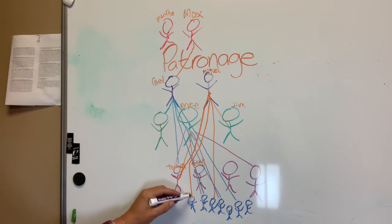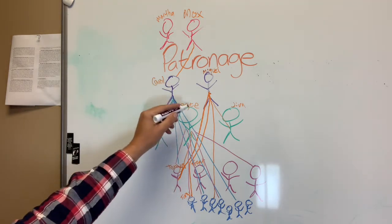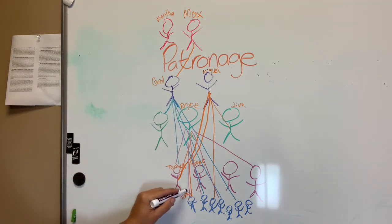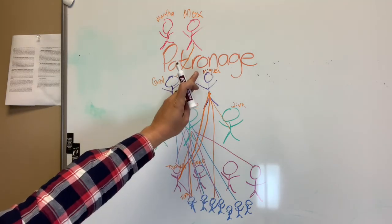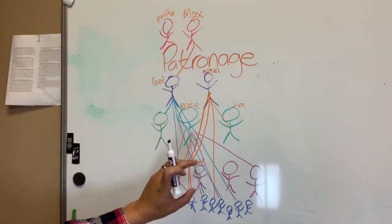Tony very likely is a client of Miguel, a client of Bryce here, a client maybe of Tanya right here also. And so multiple clients can serve a single patron. Clients can serve multiple patrons.